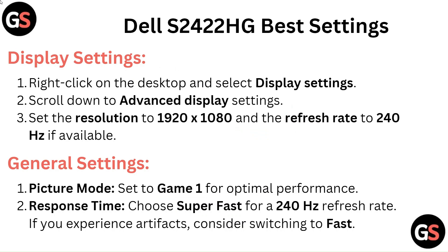Right click on the desktop and select Display Settings. Scroll down to Advanced Display Settings. Set the resolution to 1920x1080 and the refresh rate to 240Hz if available. Under General Settings, set Picture Mode to Game 1 for optimal performance.